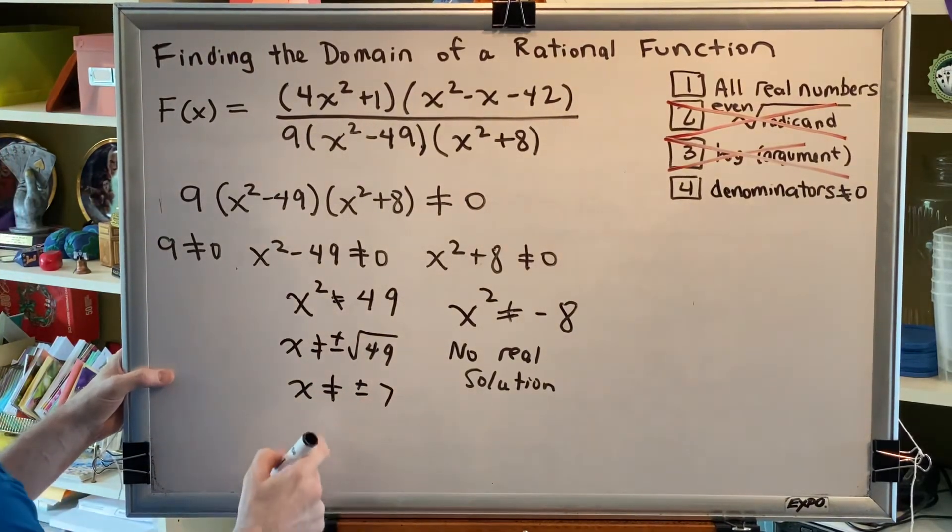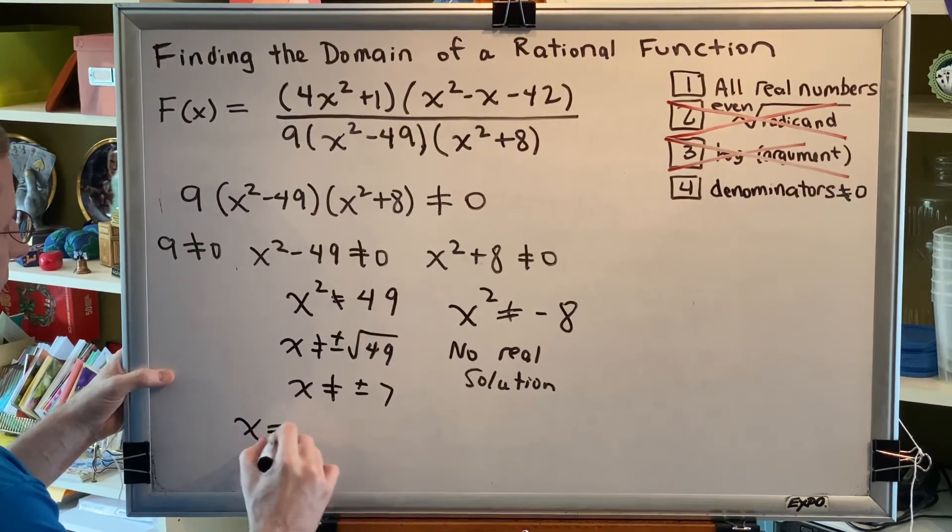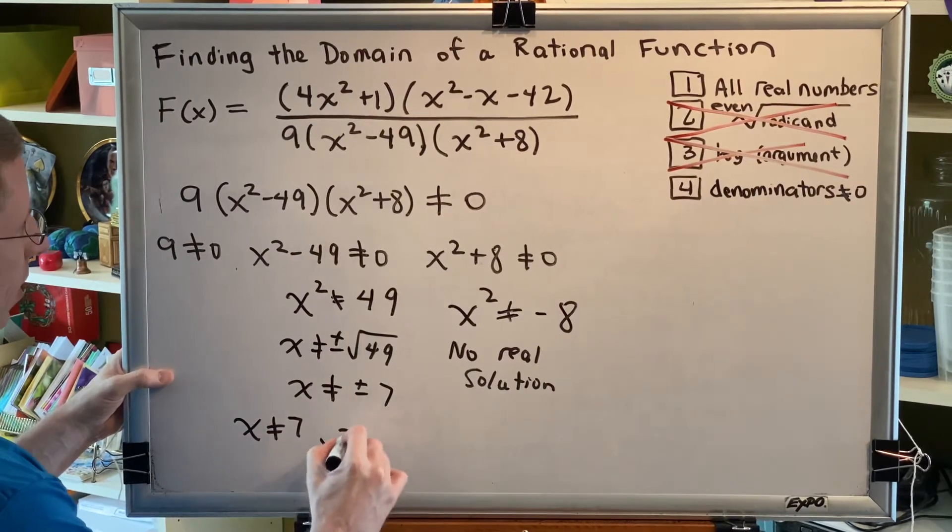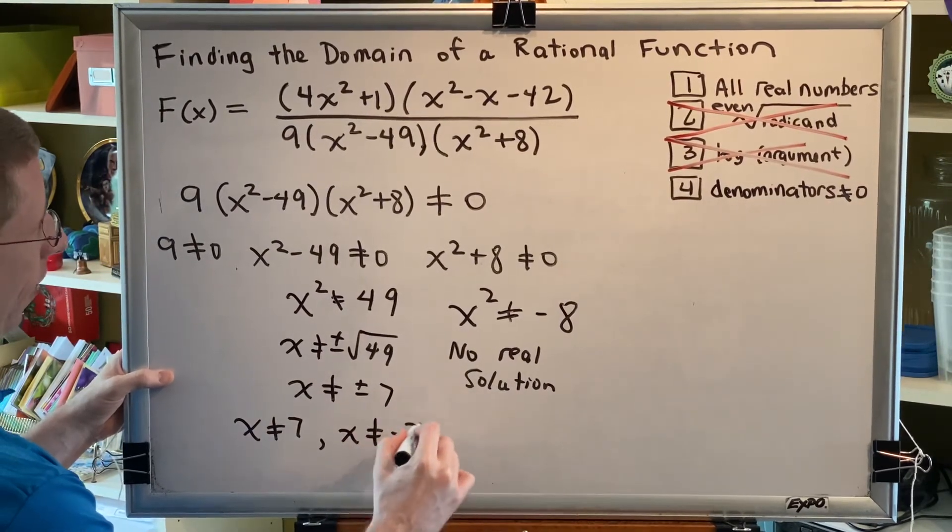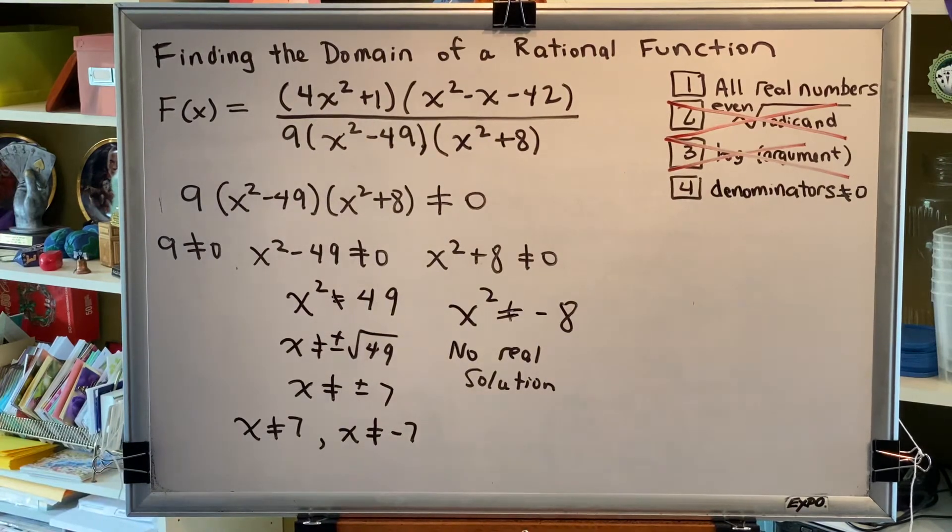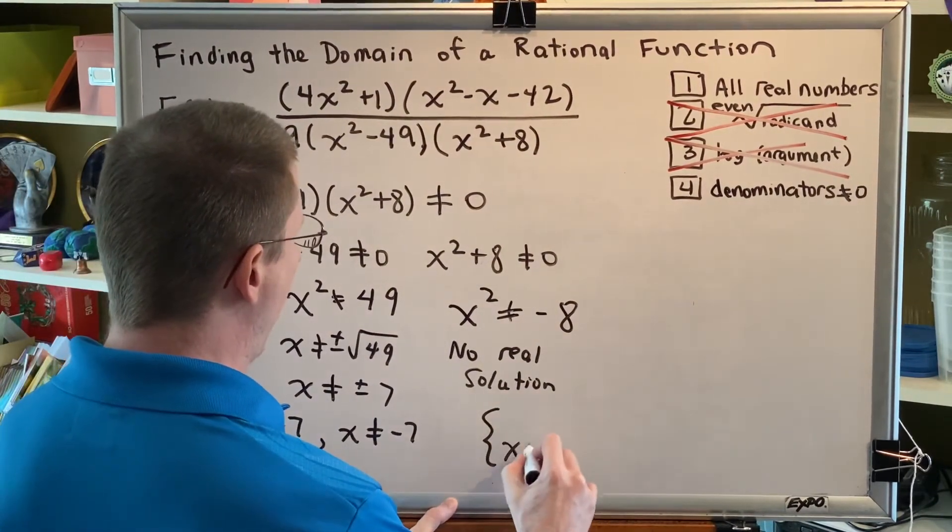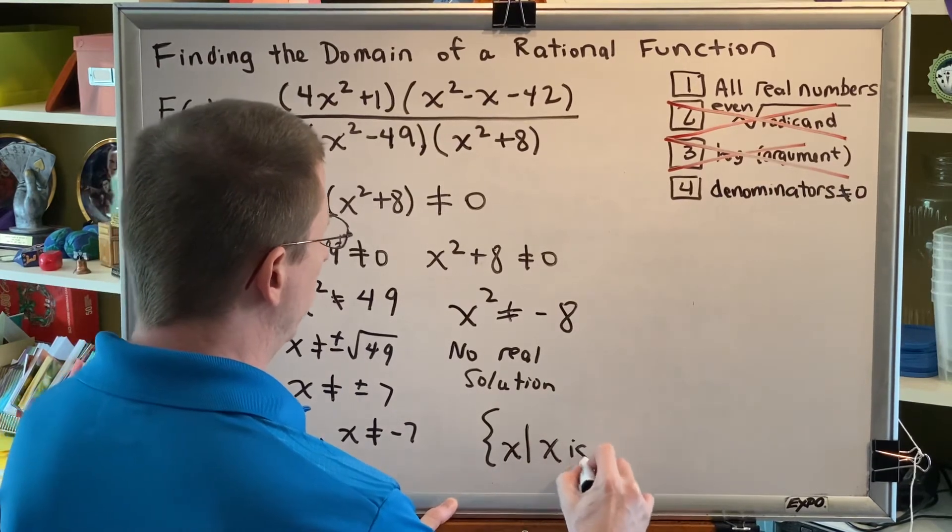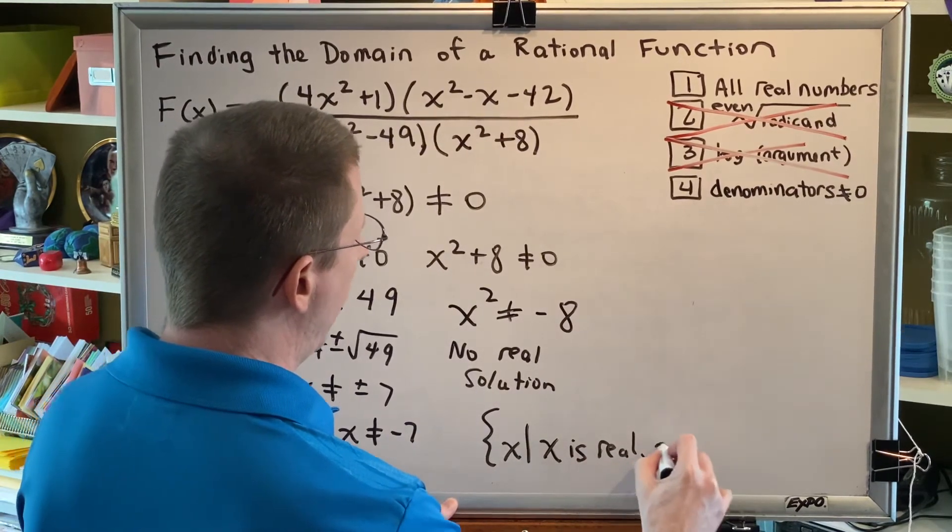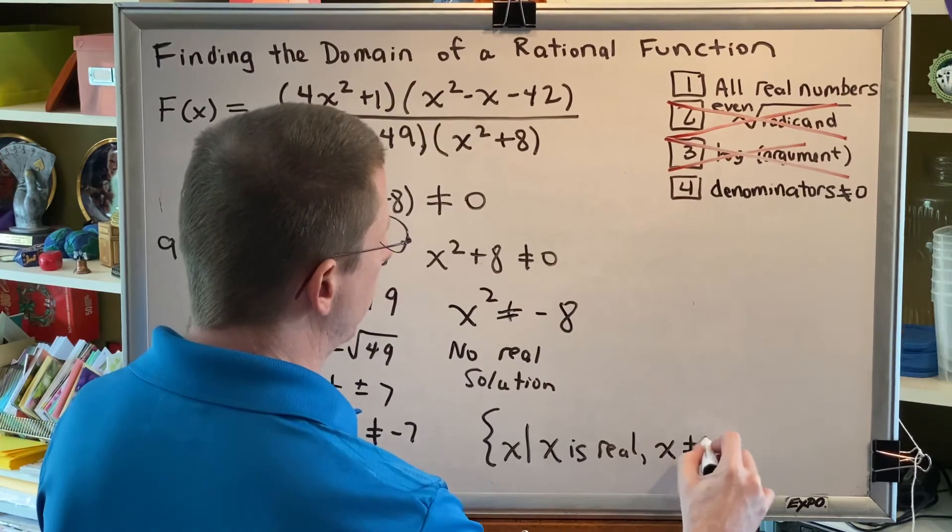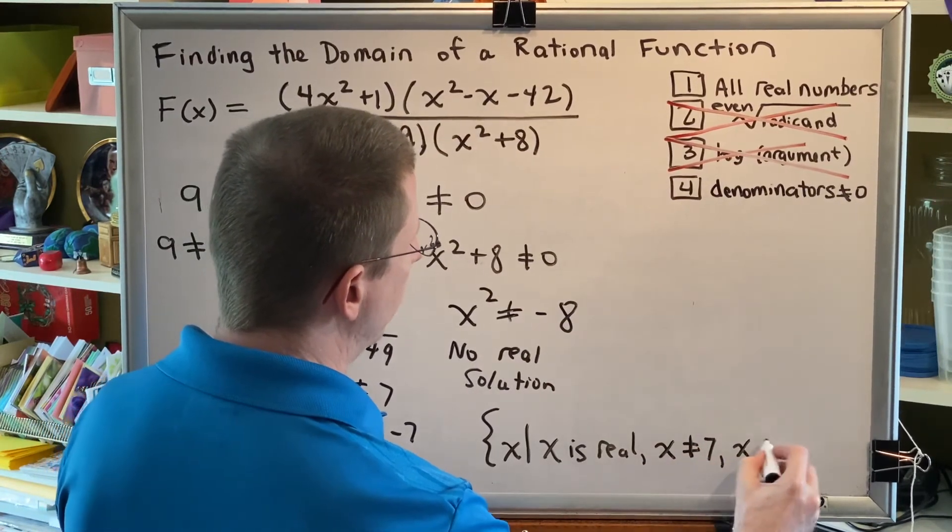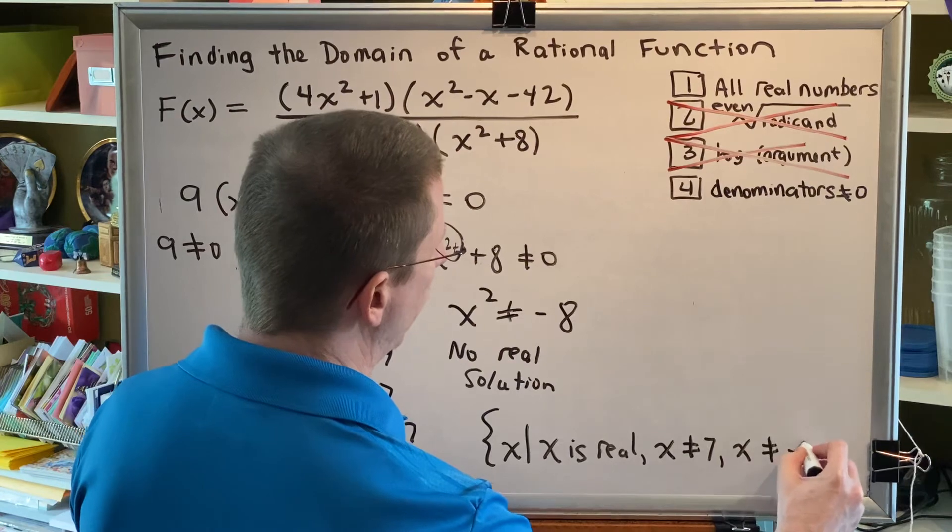So what that tells me is that for this problem, x cannot be 7, and in addition, x cannot be -7. This allows us to write our final answer for the domain. The domain is the set of all x such that x is real and x ≠ 7 and x ≠ -7.